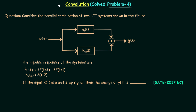Let's solve the 4th problem based on convolution. I have taken this problem from GATE 2017 Electronics and Communication paper. In this problem there are 2 LTI systems connected in parallel. H1(t) is the impulse response of the first LTI system and H2(t) is the impulse response of the second LTI system. As they are connected in parallel they will have the same input xt, and the output y(t) is obtained after adding the outputs of both LTI systems.